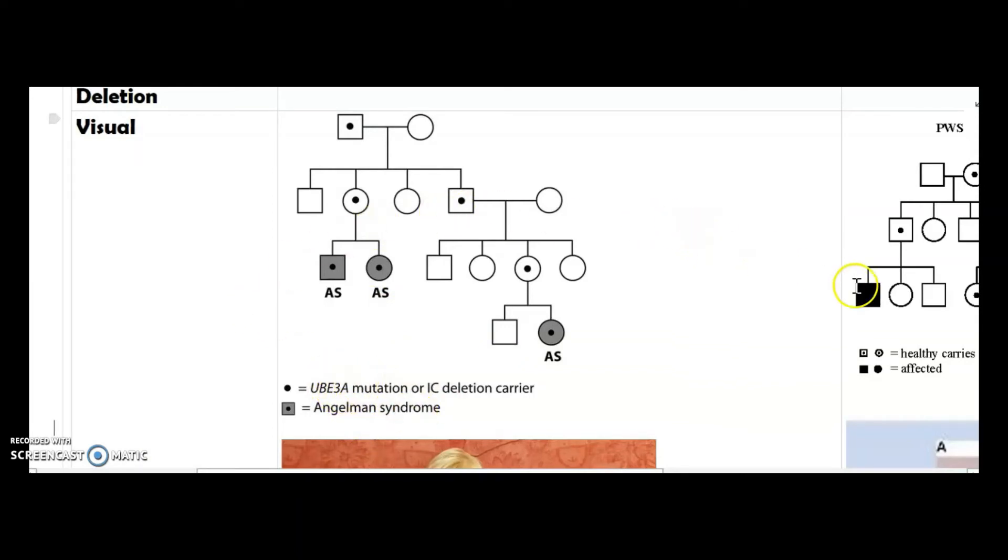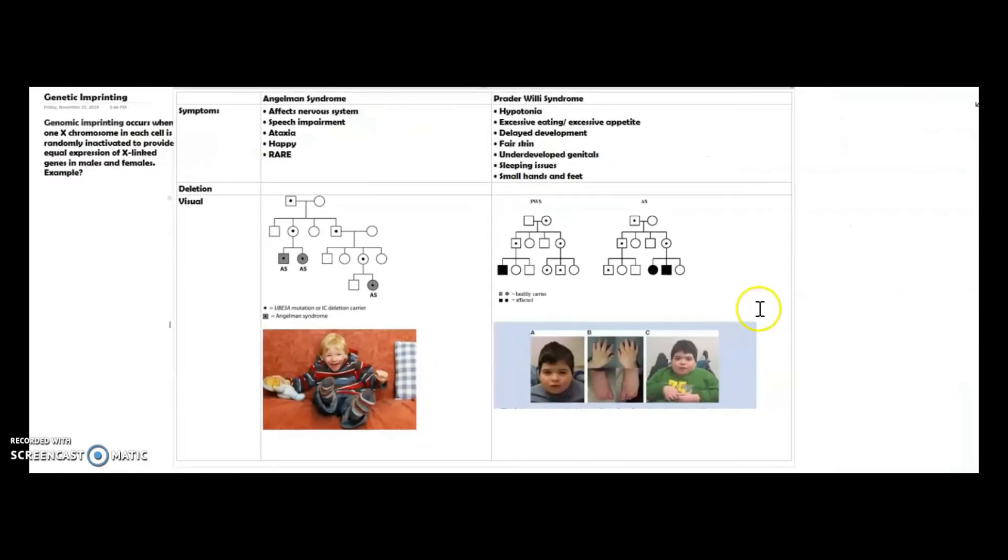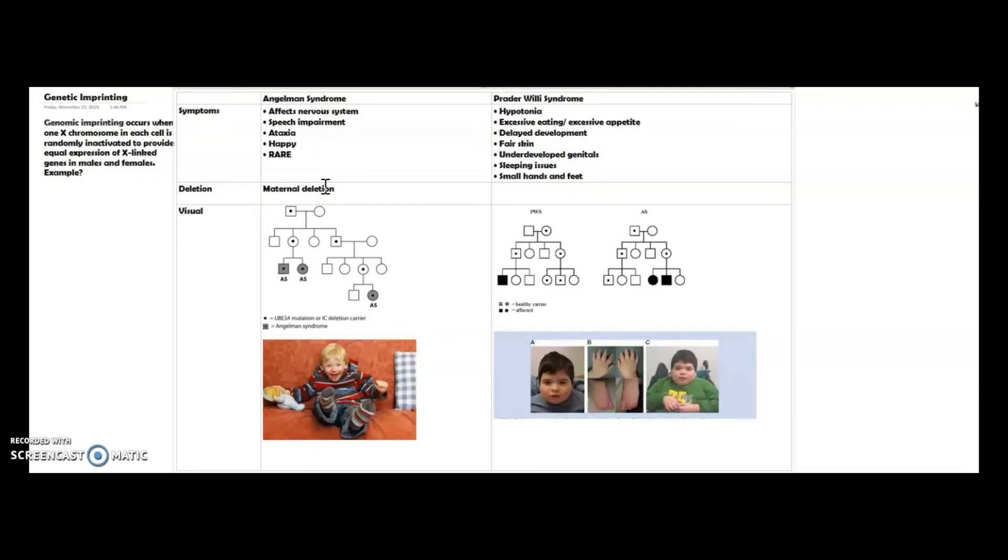For the deletion for Angelman syndrome, as I said before, maternal deletion and parental imprint. And as I explained before, imprinting is like silencing.